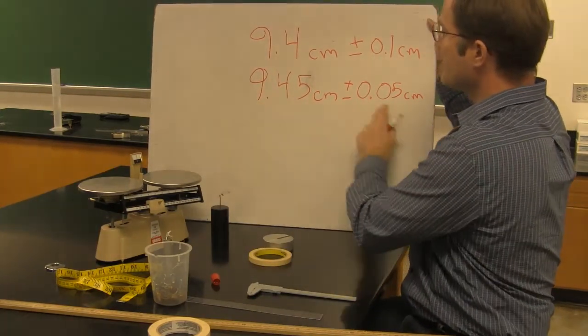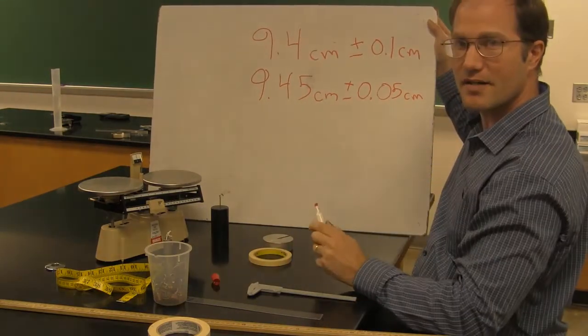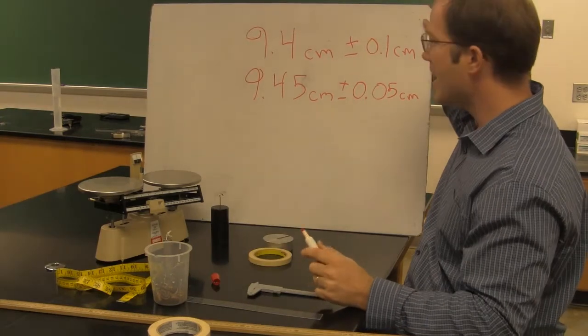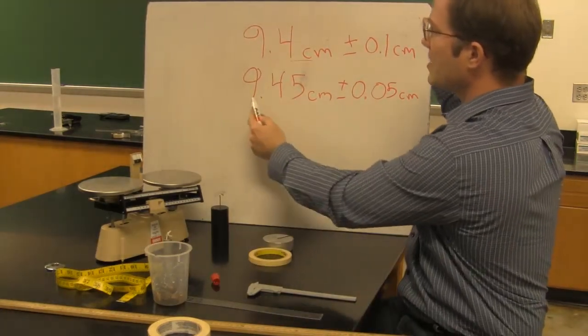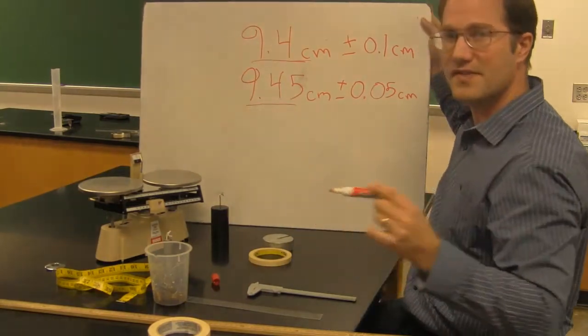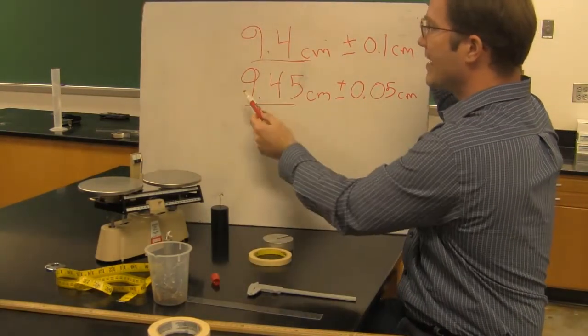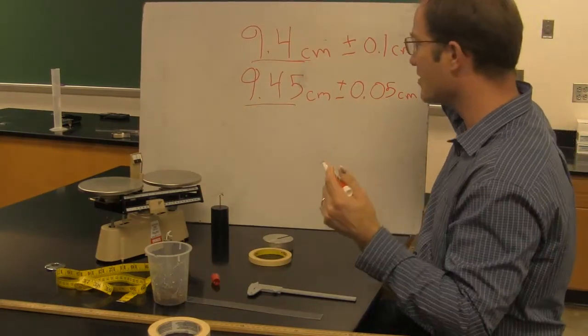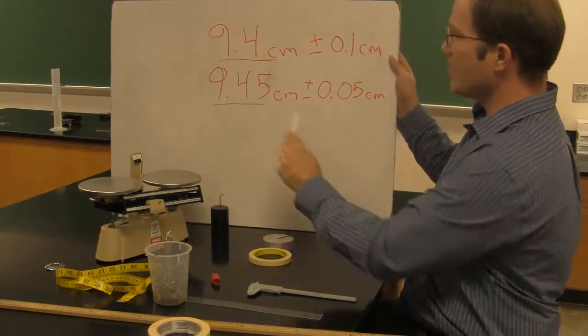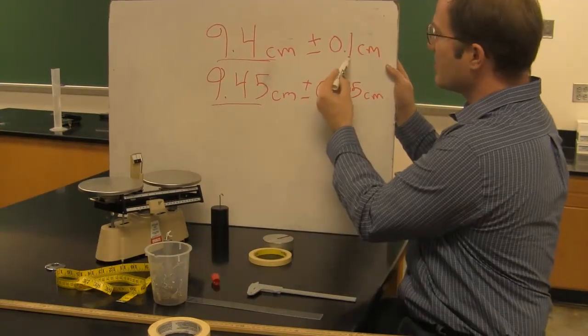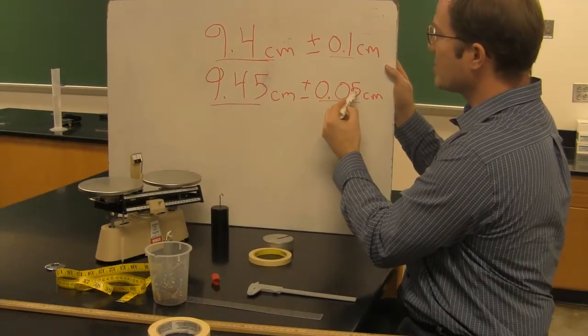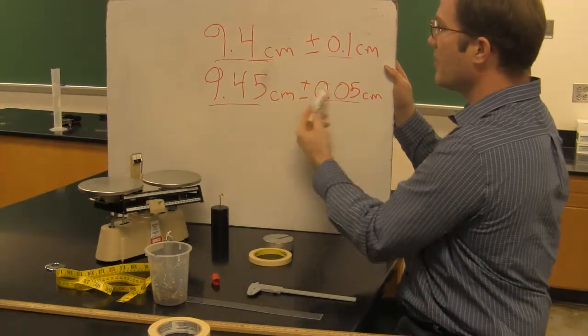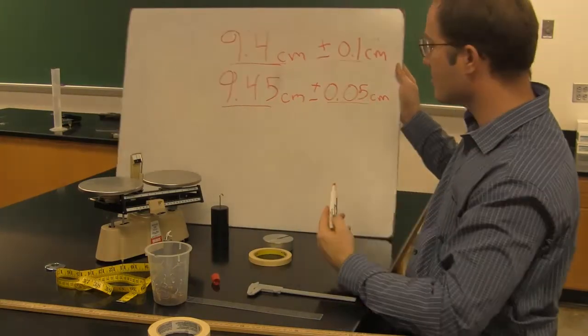This is the same measurement, but this one is a little more precise because I am estimating my uncertainty. The difference in these two measurements is the number of significant figures. This has two and this has three. The uncertainty itself is to the same precision as the measurement. This is to the tenths place. This is to the hundredths place.